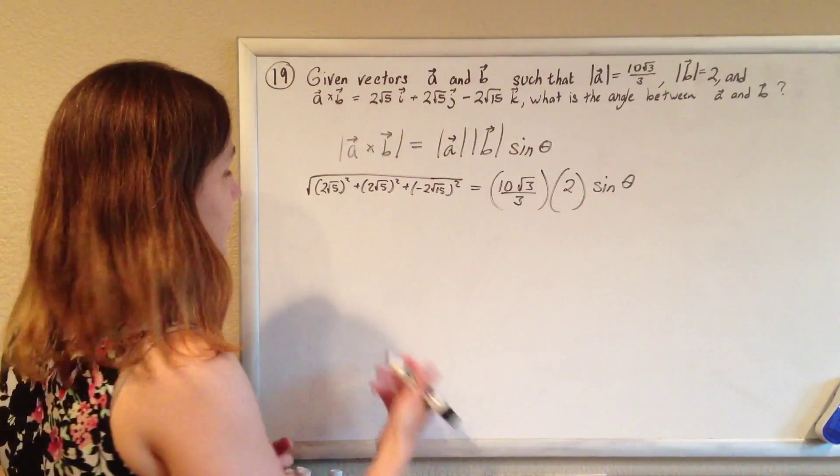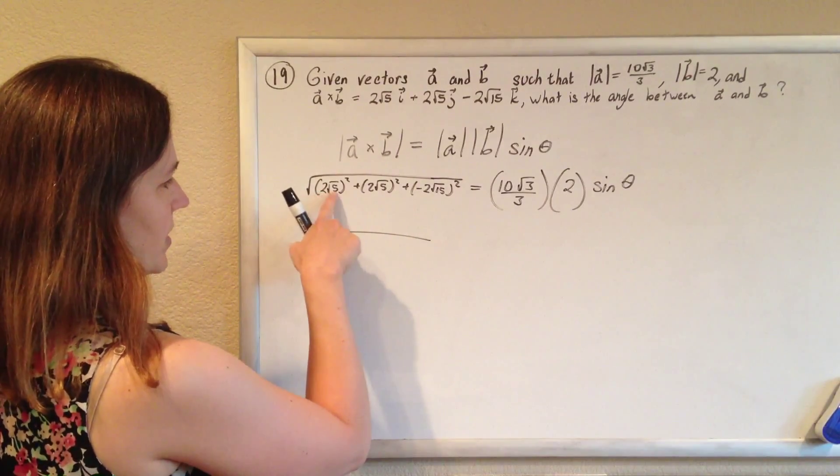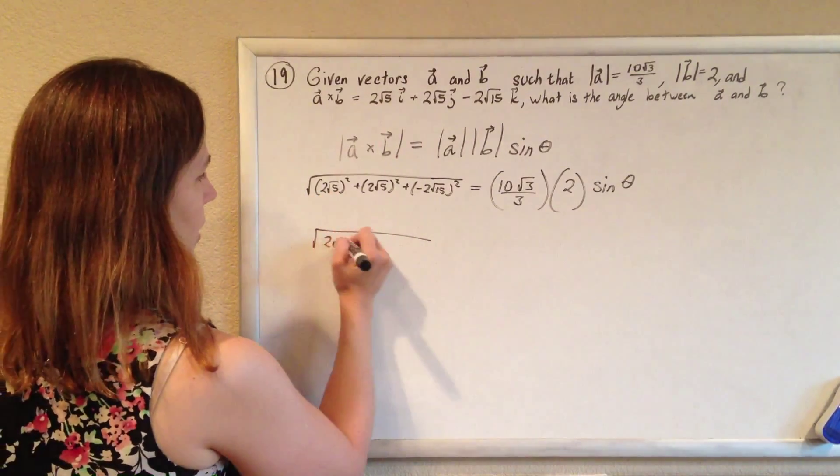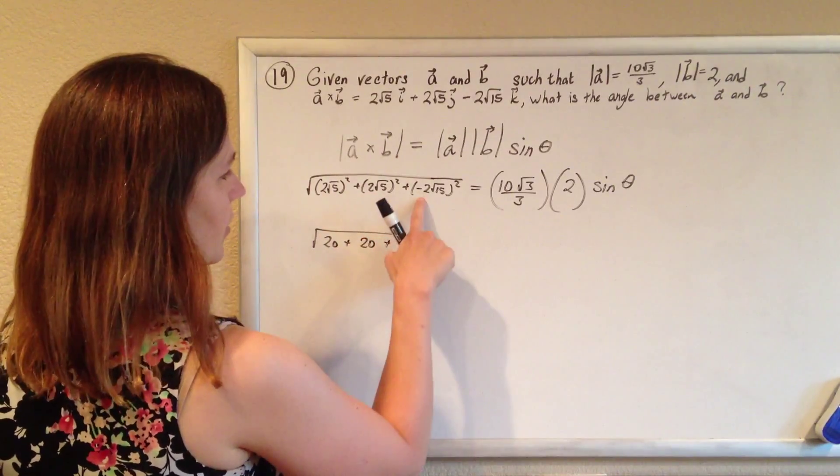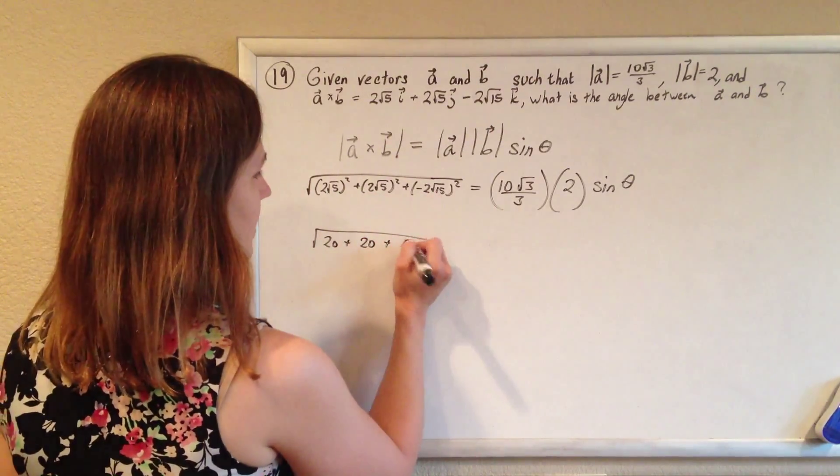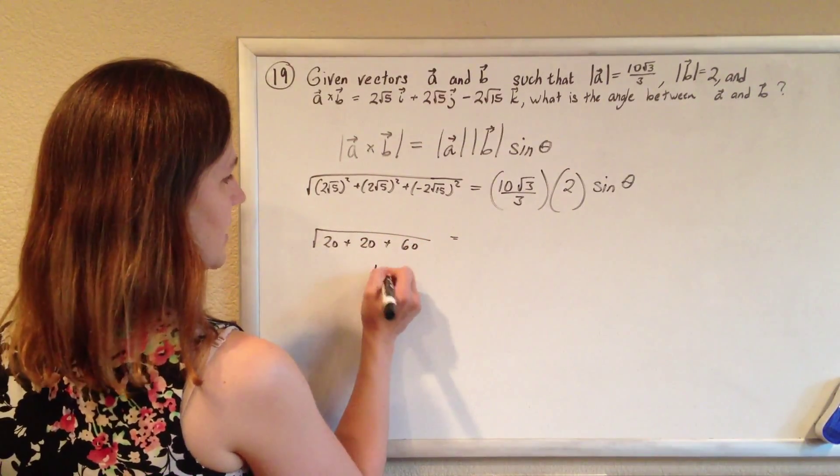We just go from here. So this guy here would be 4 times 5 is 20, and then 4 times 5 is 20, and then 4 times 15 is 60. And so that's the square root of 100, which is 10.